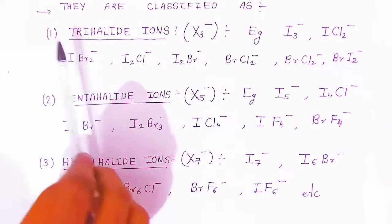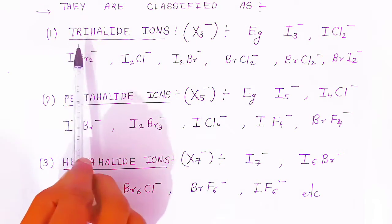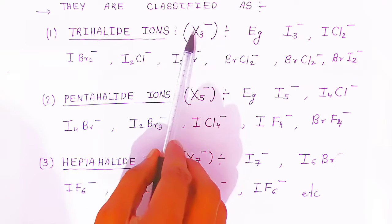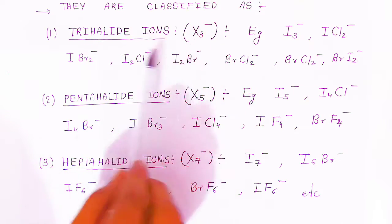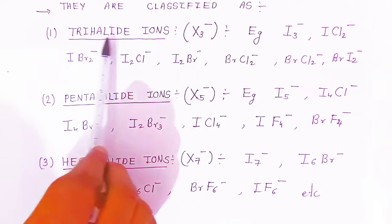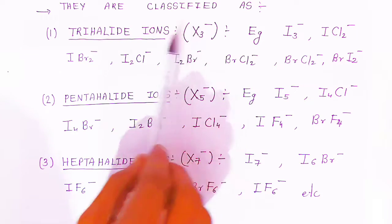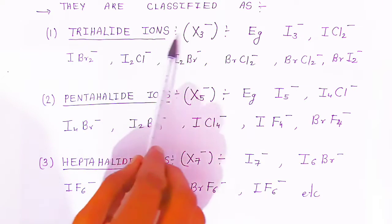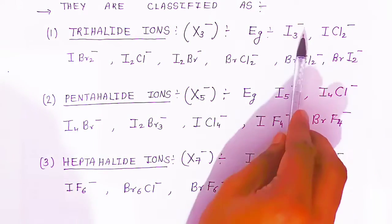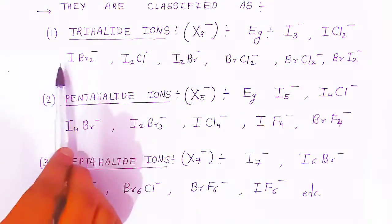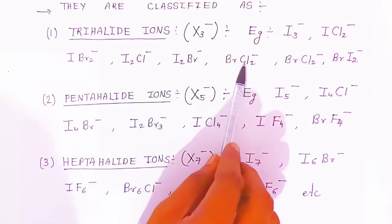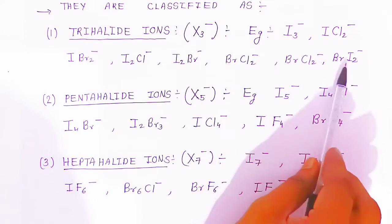Polyhalides are classified into types. The first classification is trihalide ions, where the ion is made up of three halogen atoms — X3 minus. Examples include I3-, ICl2-, IBr2-, I2Cl-, I2Br-, BrCl2-, and BrI2-. These are all trihalide ions with three halogen atoms and a negative charge.